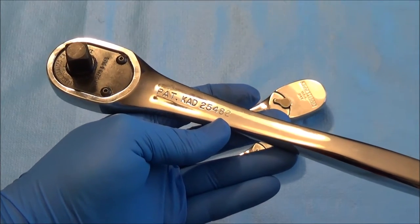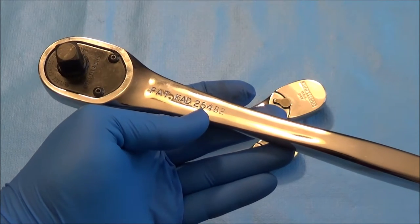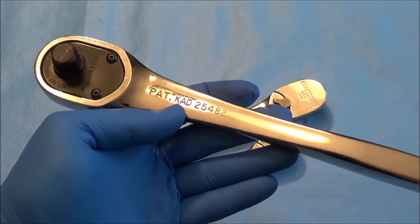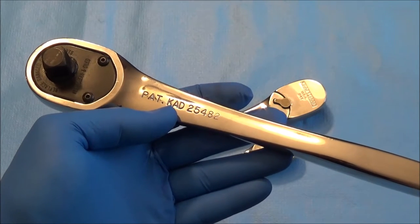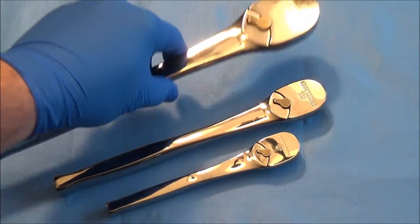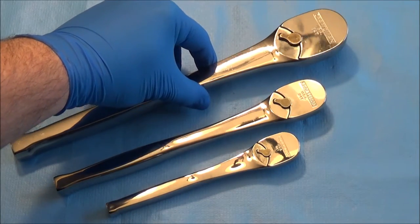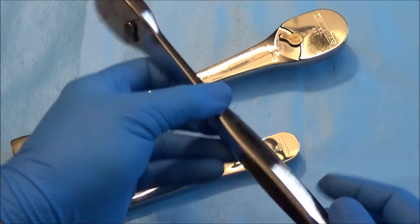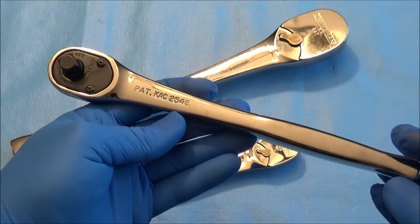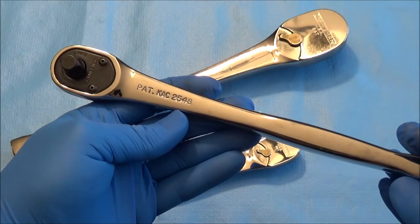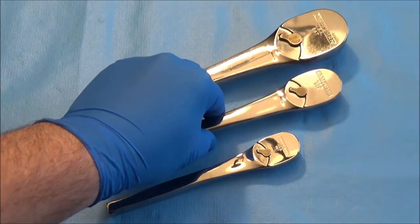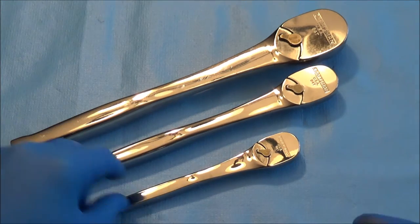Each half inch is going to have the serial number of 25482. This number series has to do with what plant it's made at and the date it was made. Here's the 3/8 with serial number 2548. These serial numbers are consistent amongst every single one of these for their respective sizes.